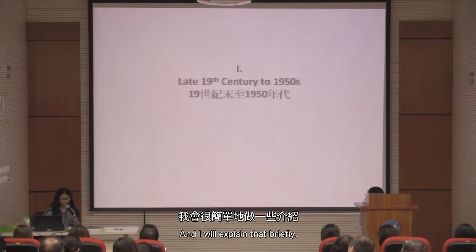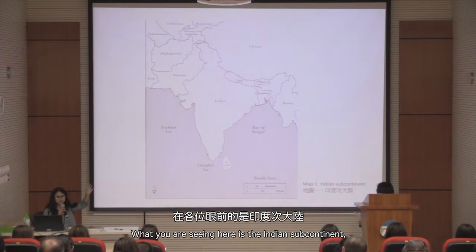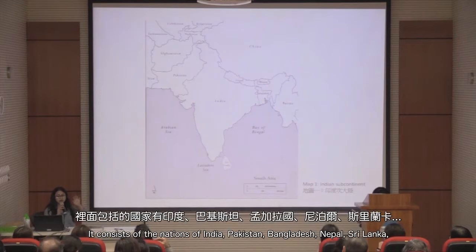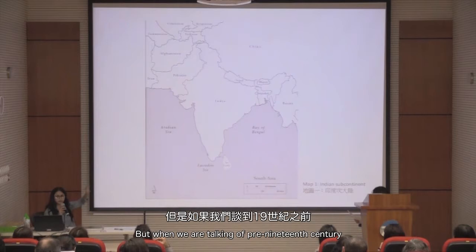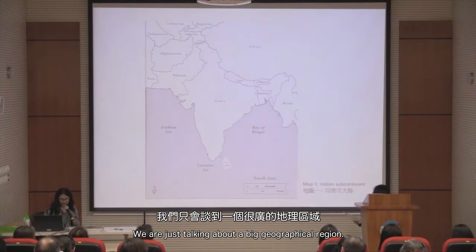But before we even do that, let's take one step back further, just to familiarize all of you with what you're seeing here — the Indian subcontinent, or a region more often known today as South Asia. This is a contemporary map. It consists of the nations of India, Pakistan, Bangladesh, Nepal, Sri Lanka, Bhutan, Afghanistan to some extent. But when we are talking of pre-19th century and pre-colonial India, we are not talking of all these nation states — we are talking of just a big geographical region.